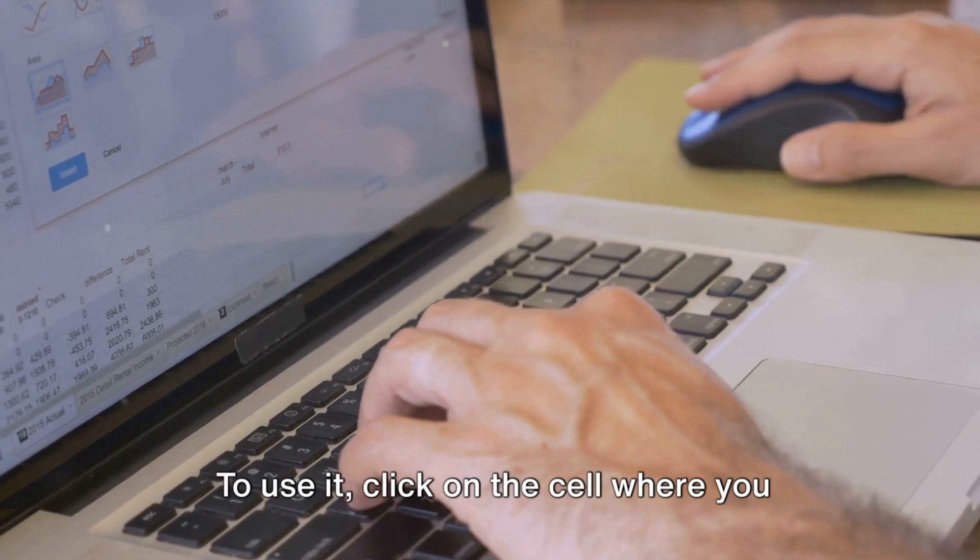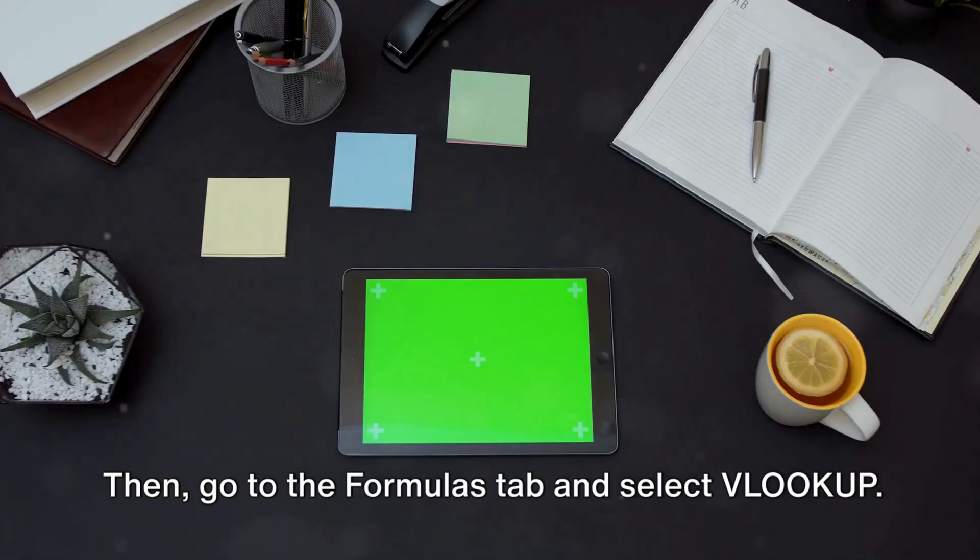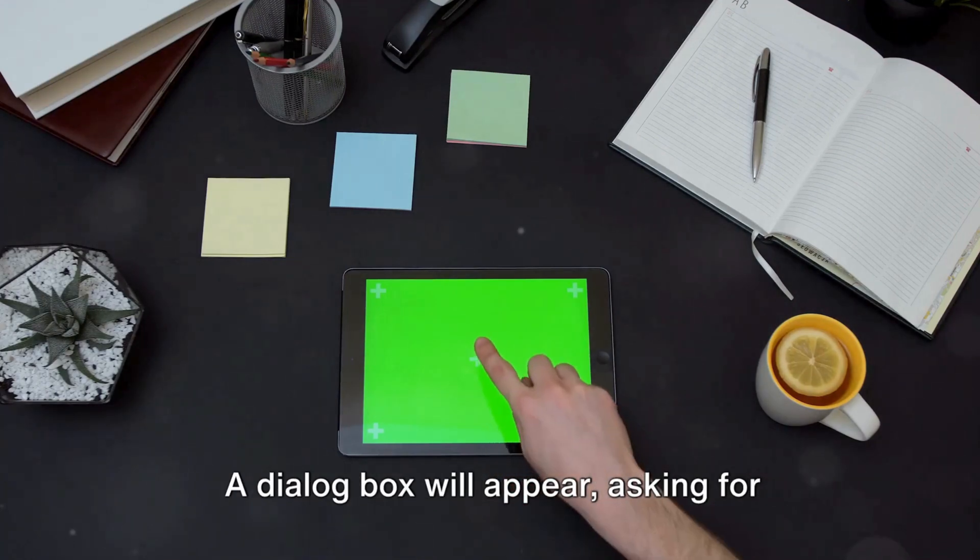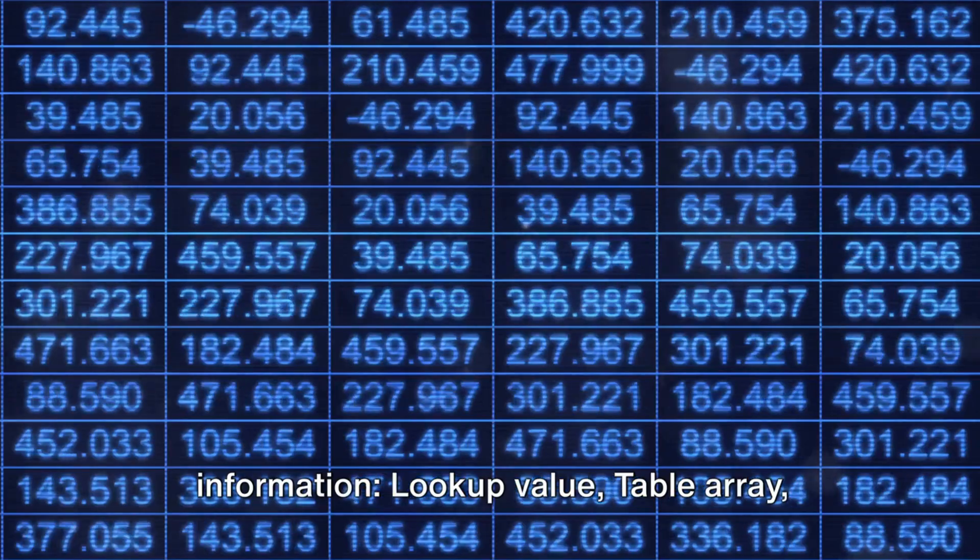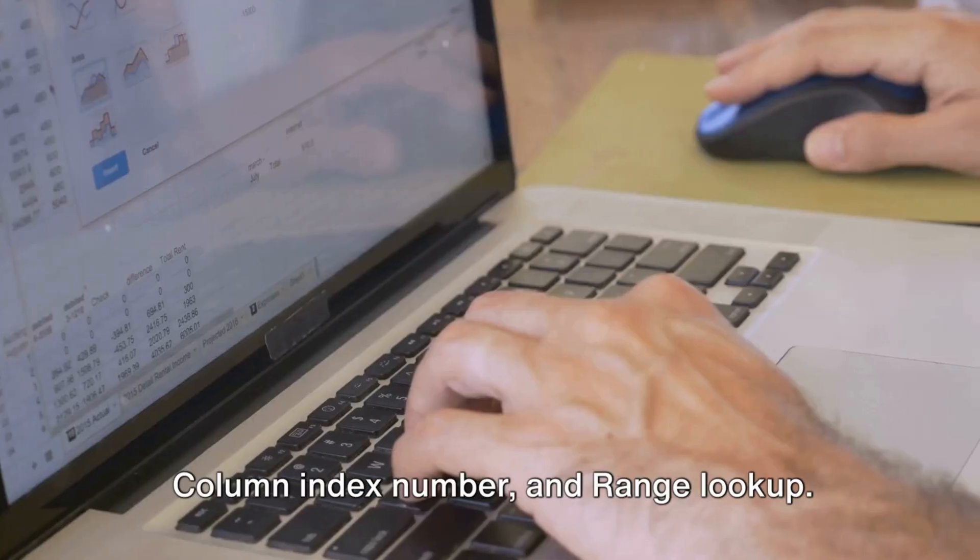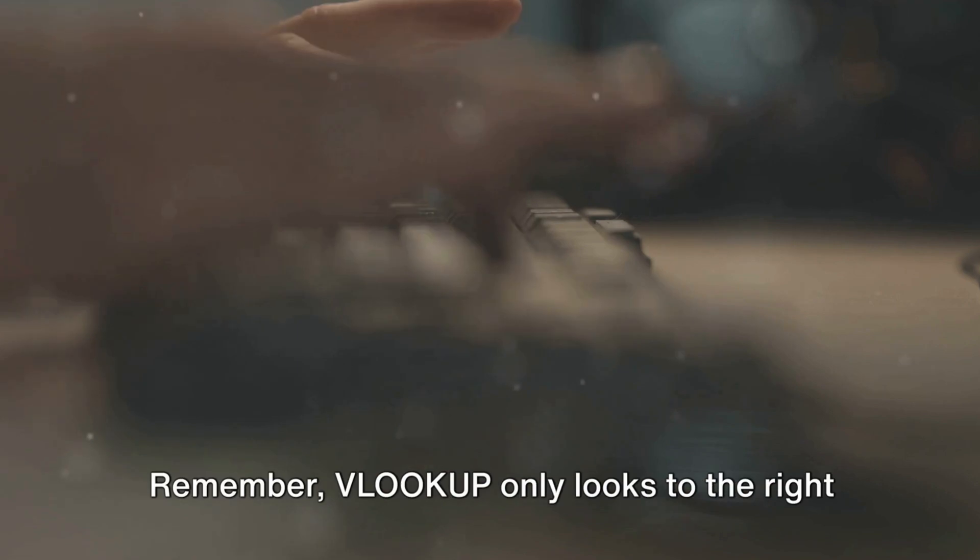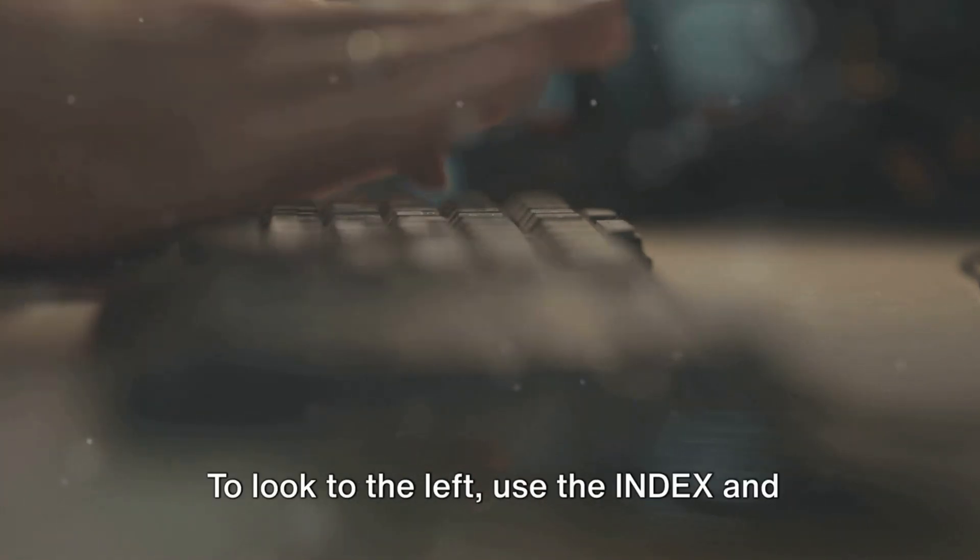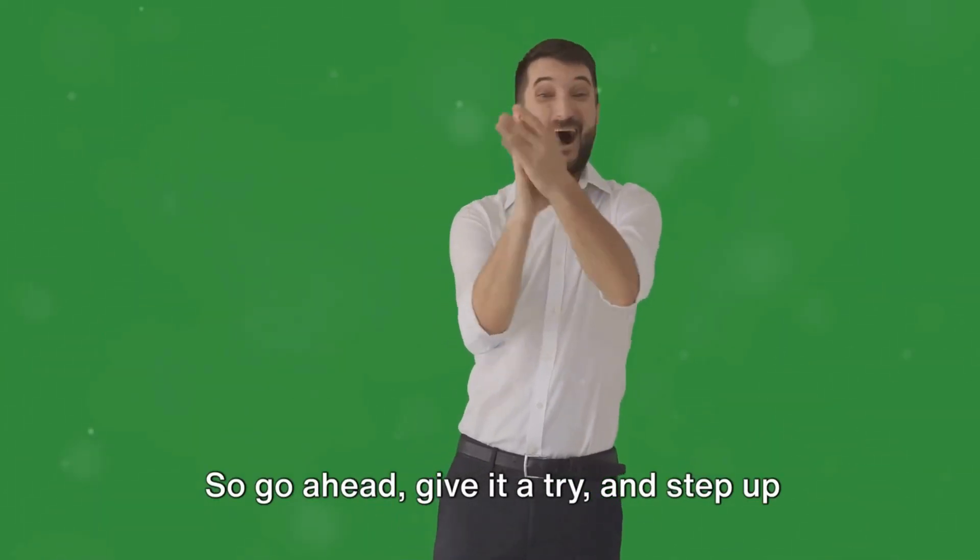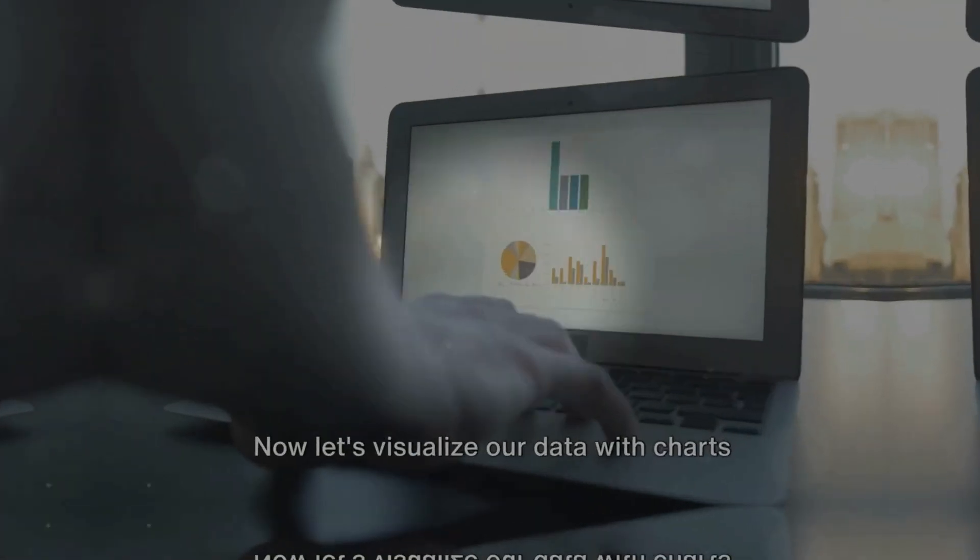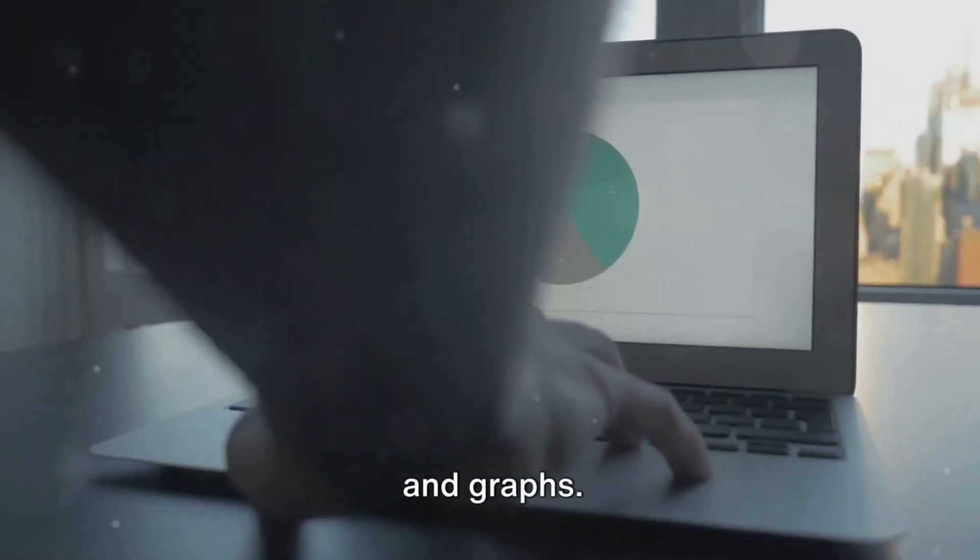You can use the VLOOKUP function to quickly find data in a large spreadsheet, like finding the price of a product using its ID. To use it, click on the cell where you want the data to appear, then go to the Formulas tab and select VLOOKUP. A dialog box will appear asking for lookup value, table array, column index number, and range lookup. Fill in these fields and hit Enter. Remember, VLOOKUP only looks to the right.